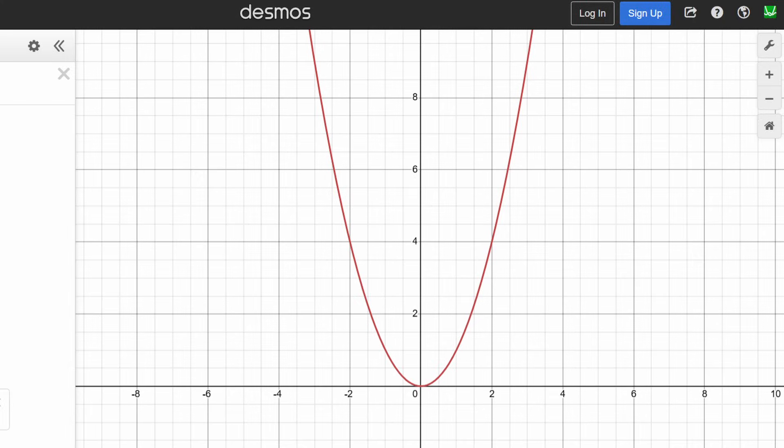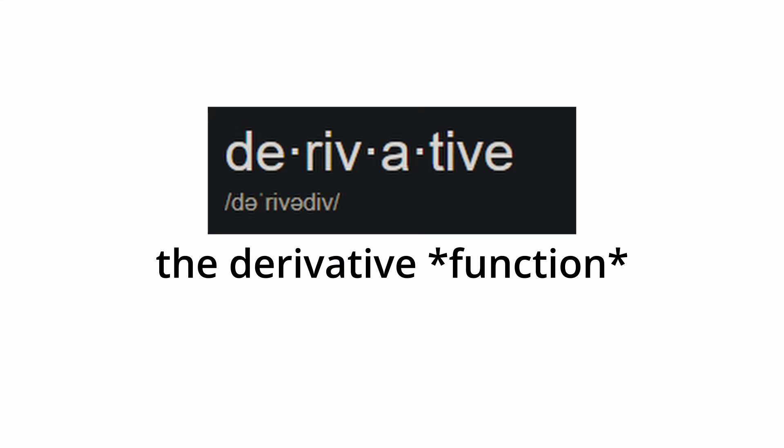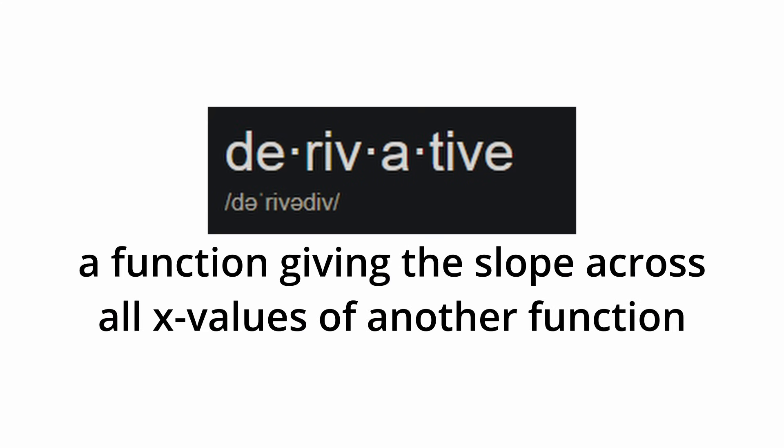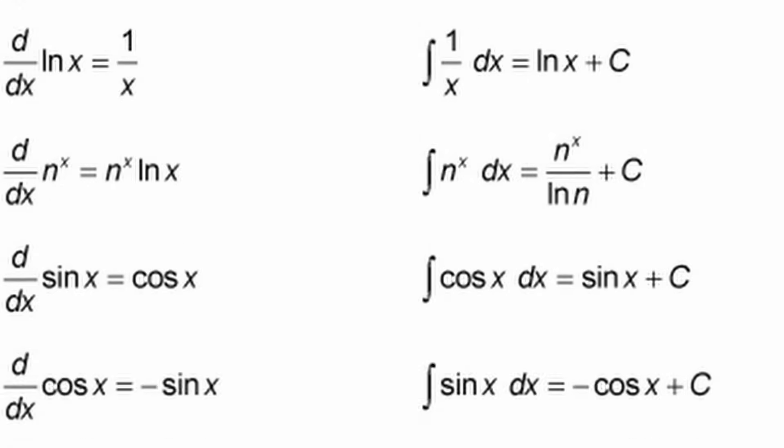A simple example is a parabola, f of x equals x squared. With some algebra and our new formula, we get that the derivative, or the slope across all x values, is a new function, 2x. Actually, you can do this with every single derivative that you're generally expected to memorize in your class. Pretty cool, huh?